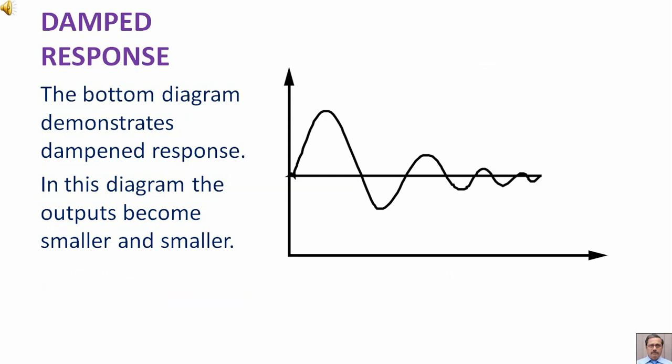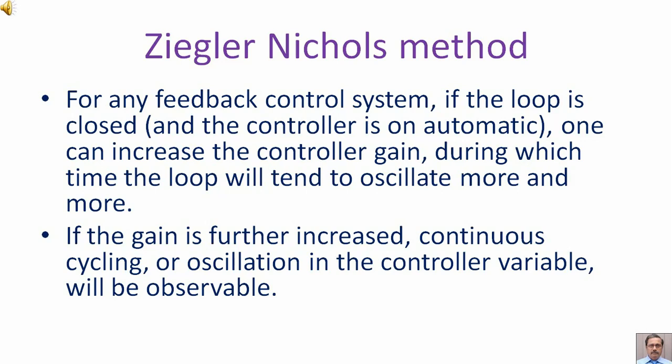For any feedback control system, if the loop is closed and the control is on automatic, one can increase the controller gain, during which time the loop will tend to oscillate more and more.